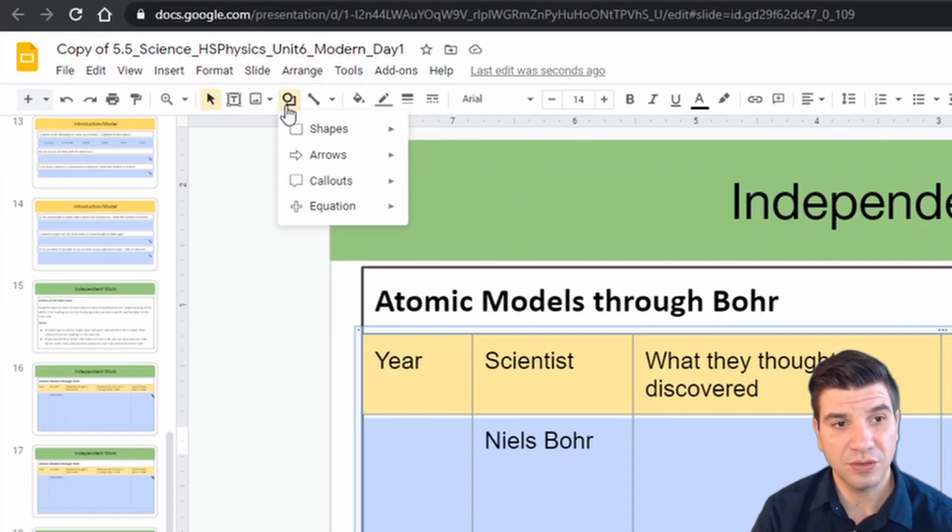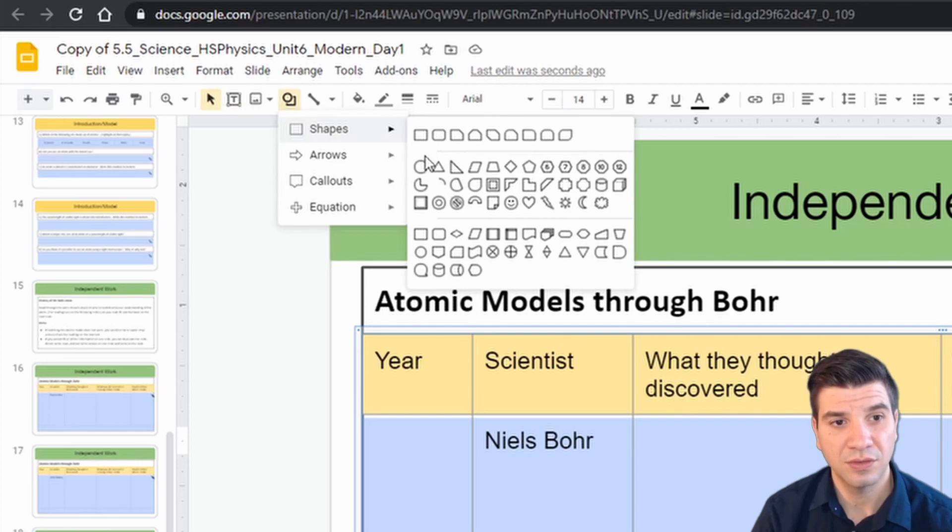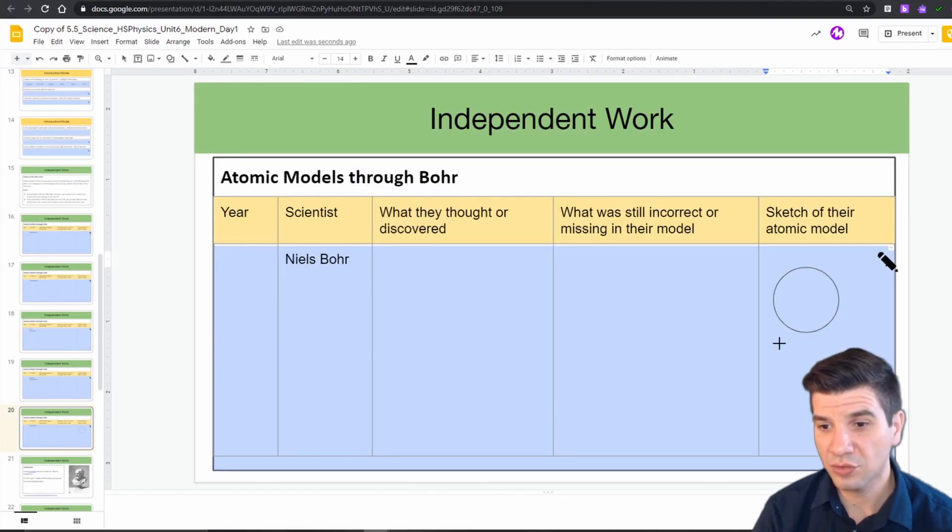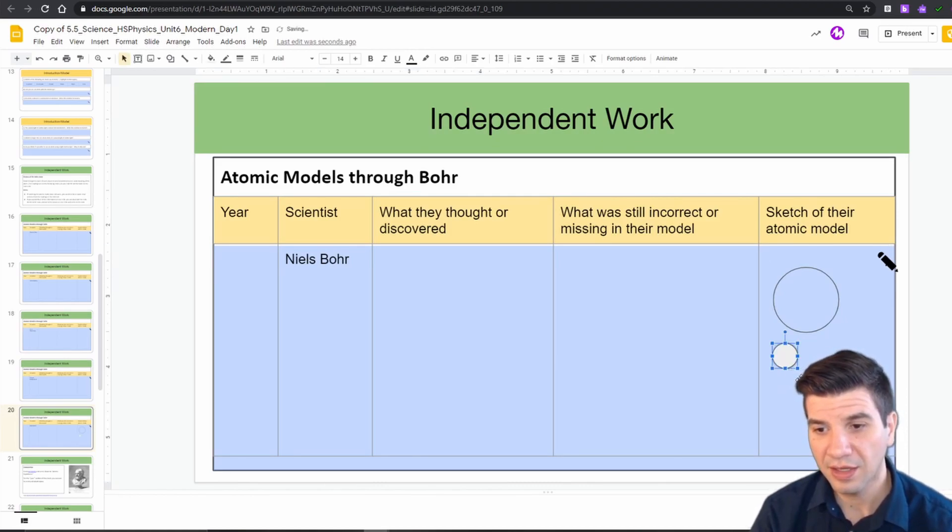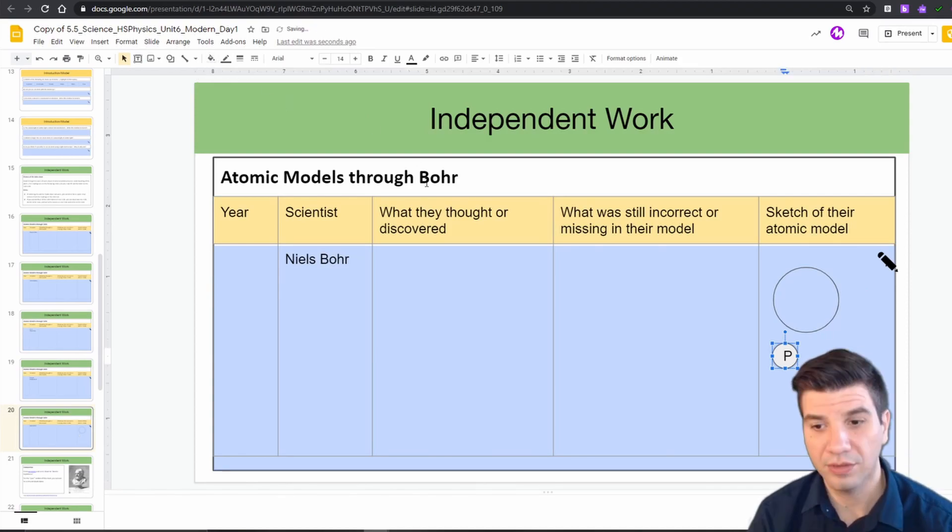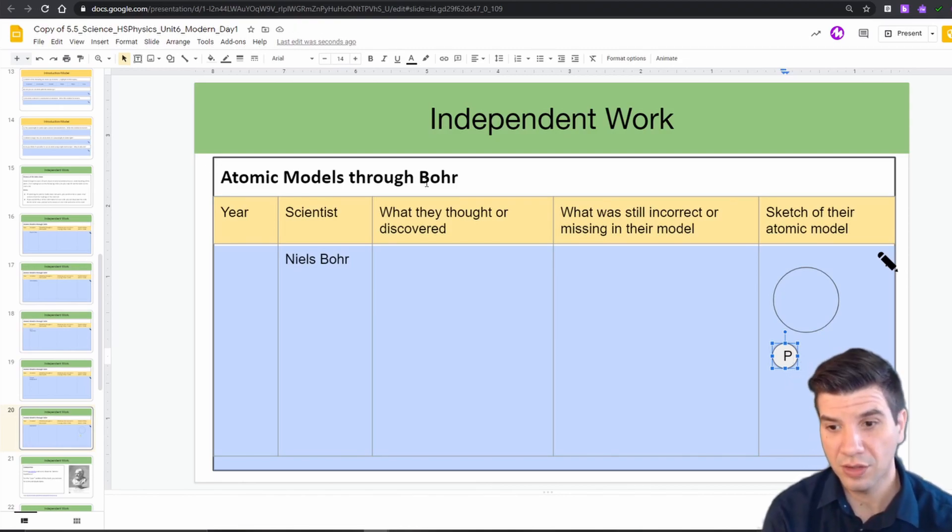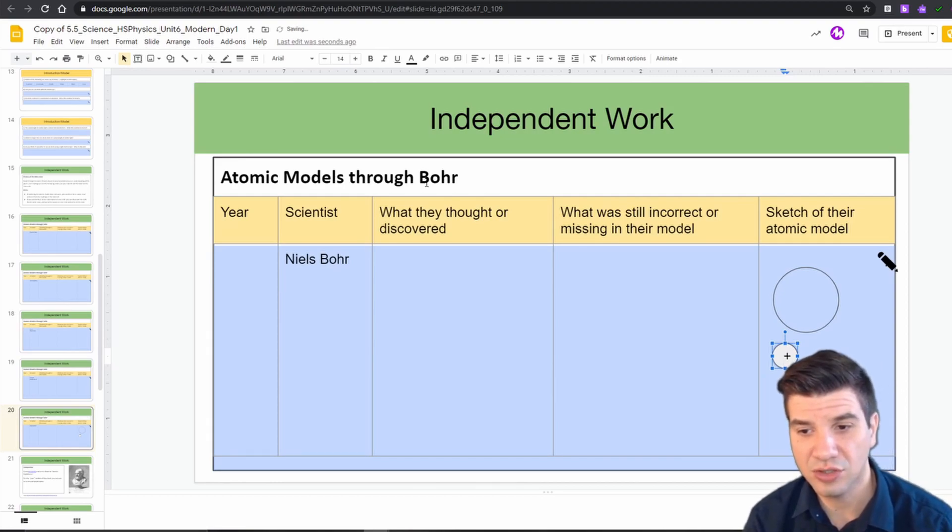You can also use the shape tool to draw protons and neutrons. Again, you want to hold down the shift to get a perfectly round circle if that's what you'd like. And then we can fill them in with a letter. For example, you might want to fill it with the letter P to represent proton or give a little plus sign to designate the charge. Again, the way that you sketch this out is up to you.